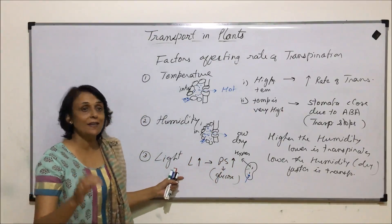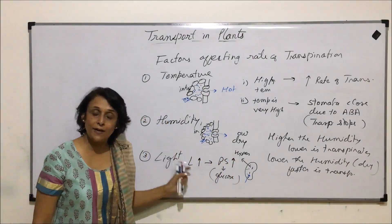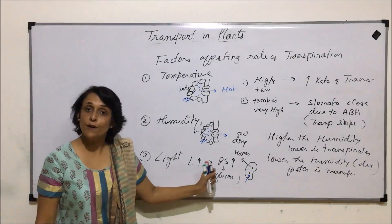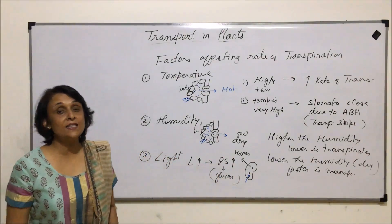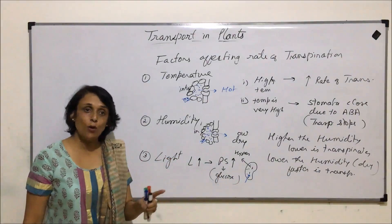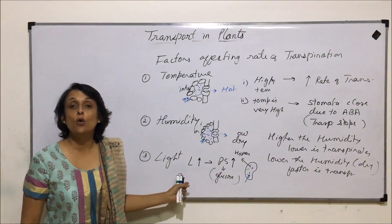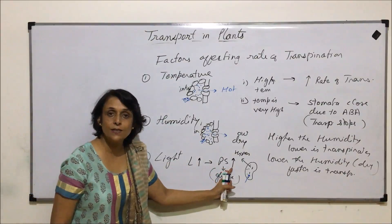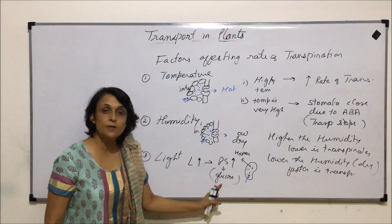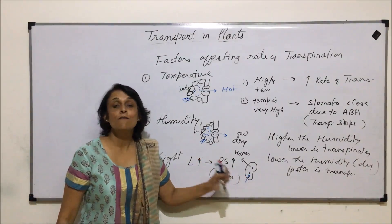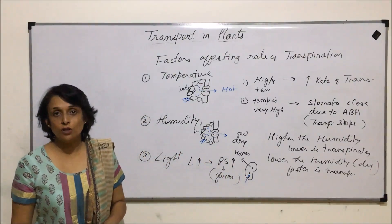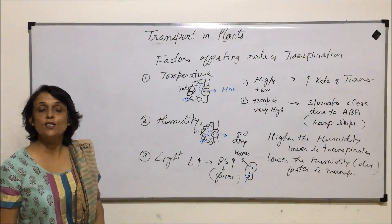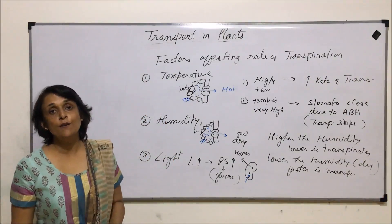Light is not a direct factor like temperature and humidity, but it does affect the rate of transpiration. If light intensity is too high, abscisic acid causes stomata to close. In summary: light intensity increases → photosynthesis increases → glucose accumulates in guard cells → endosmosis occurs → stomata open. These are the factors that regulate the rate of transpiration.